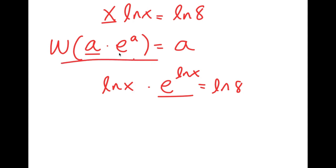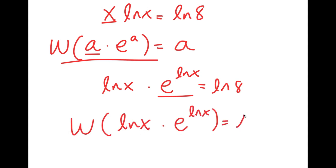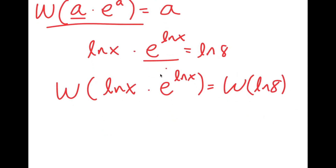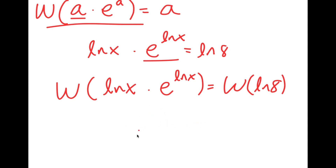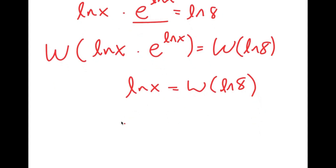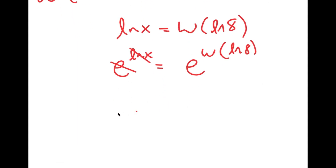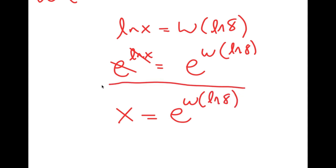Now I can use this formula, so I'm going to take the W on both sides. So I have W of ln x times e to the power of ln x is equal to W of ln 8. This simplifies so that ln x is equal to W of ln 8. Then I'm going to take e to the power of both sides, so e to the power of ln x is equal to e to the power of W of ln 8. Since e and ln cancel out, I get x is equal to e to the power of W of ln 8. This is my value of x.